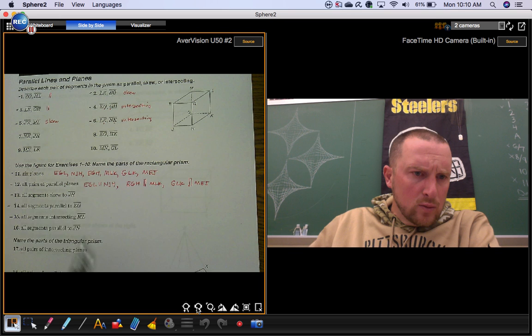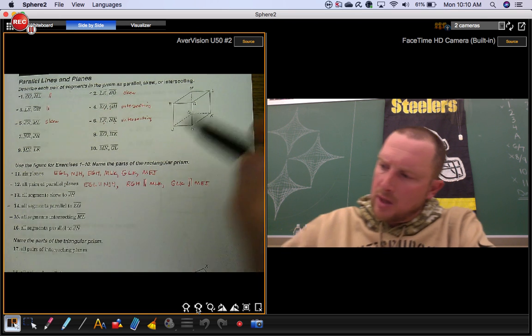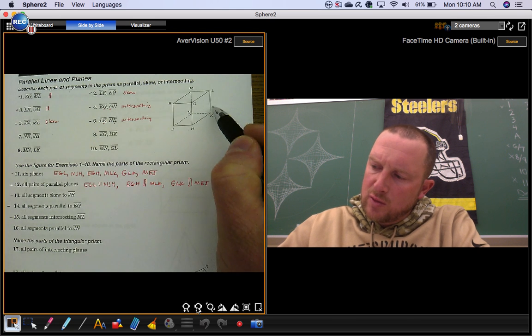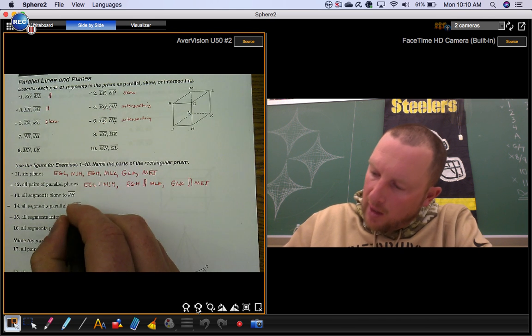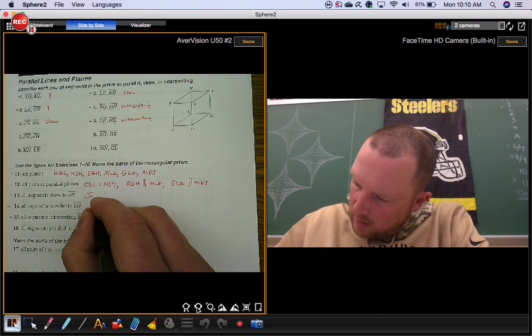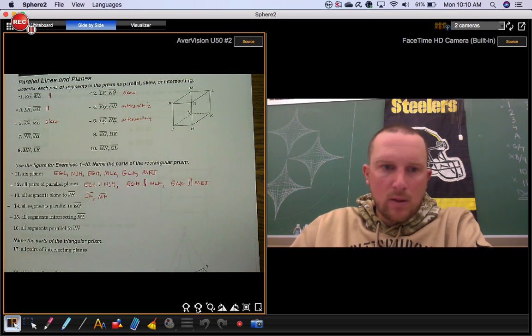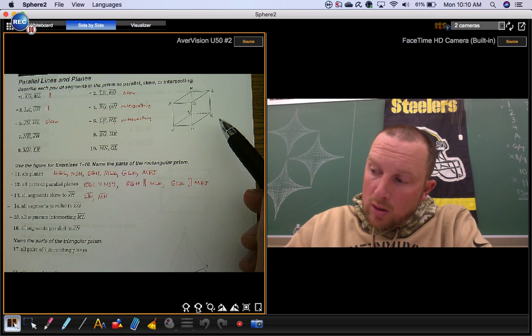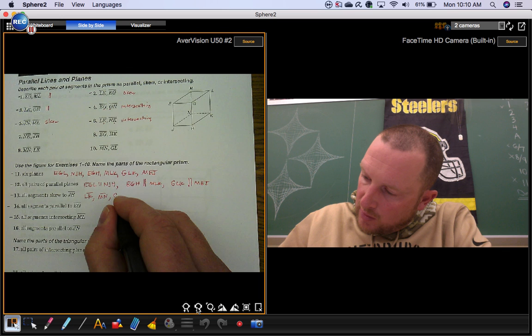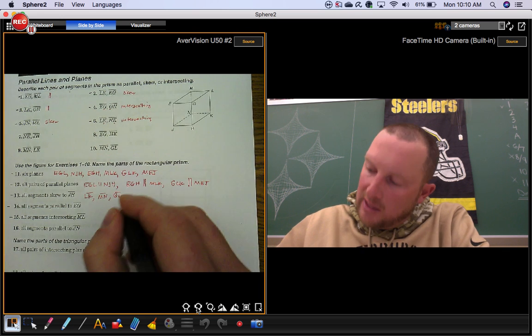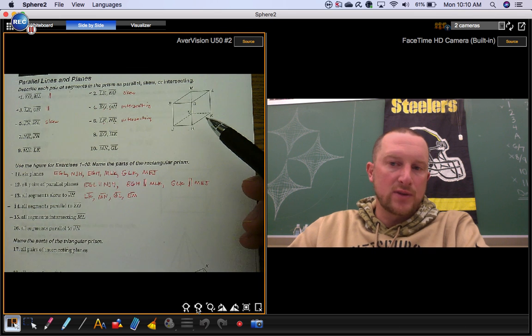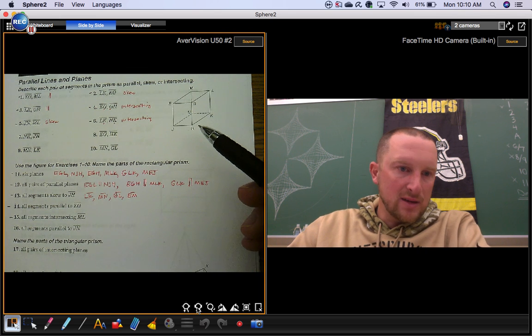Number 13, we're looking for all segments skew to segment JH. So here's segment JH. We want ones that are skewed to it, like segment LK. Or segment MN. Those are two segments that are skewed to it. Now there's more. Segment GL is also skewed to it. And segment EM is as well. Skewed segments, remember, are segments that don't touch and aren't in the same plane.